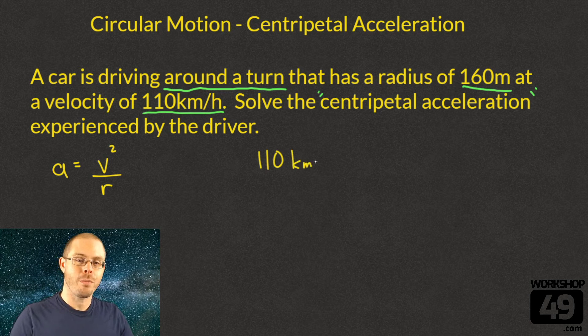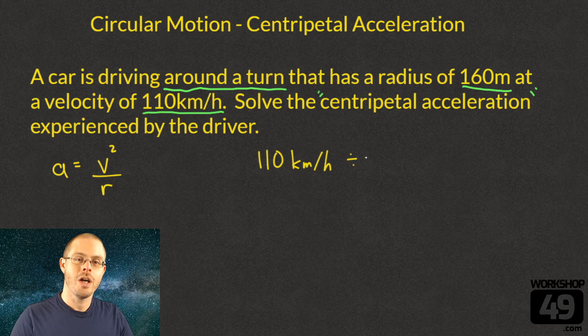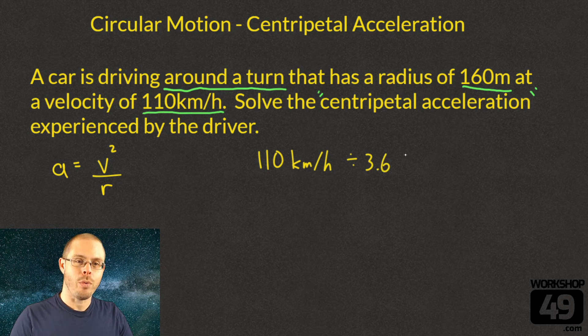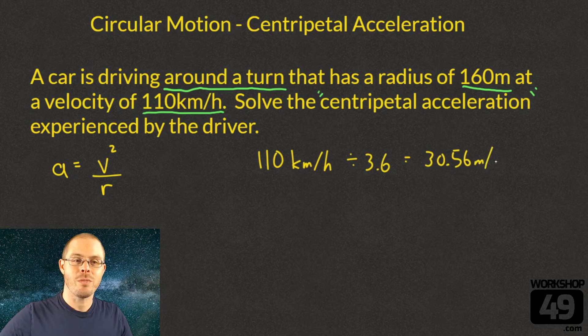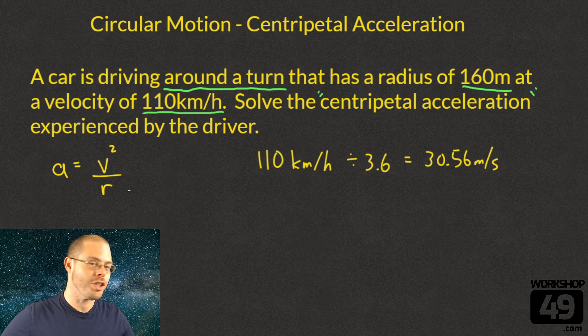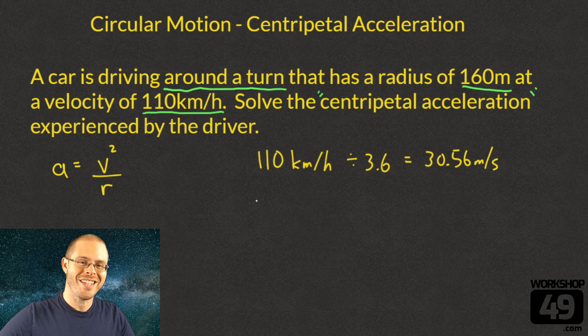We're going to have to convert from kilometers per hour into meters per second. To do that, we divide by 3.6. 110 divided by 3.6 gives us 30.56 meters per second. Great, now we have our velocity in the correct units.